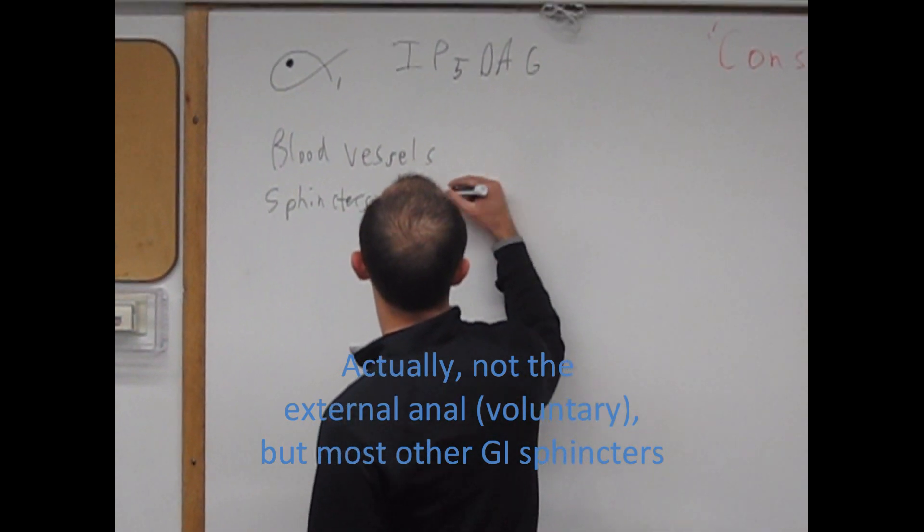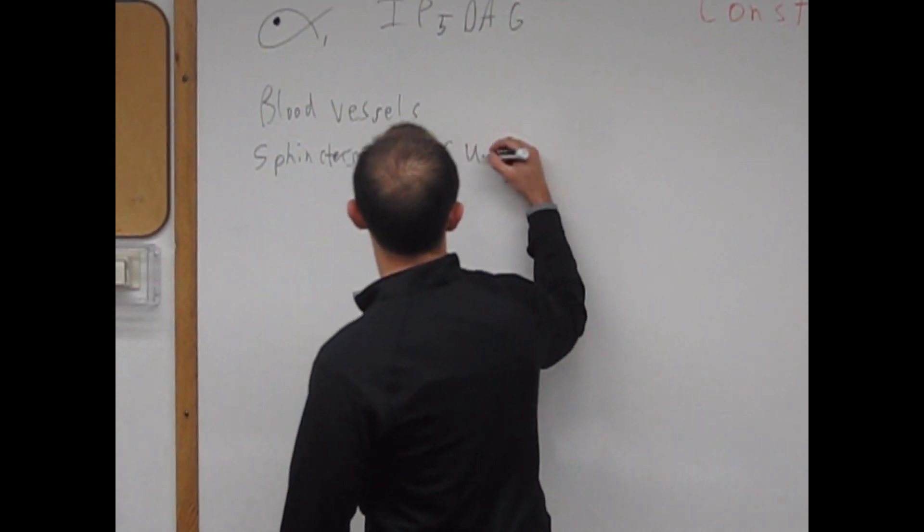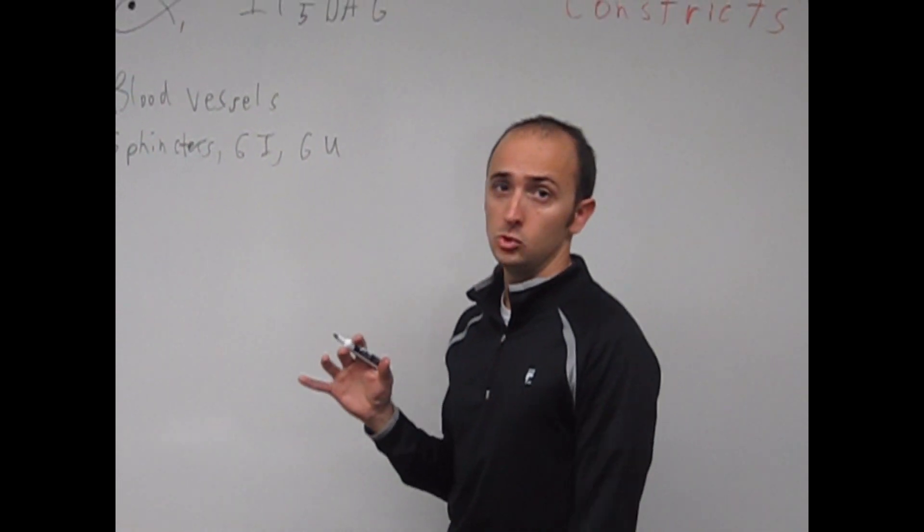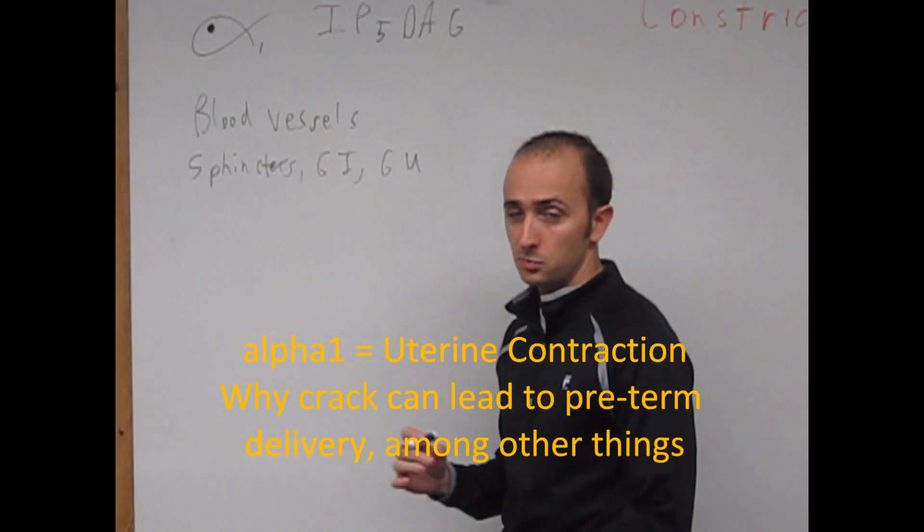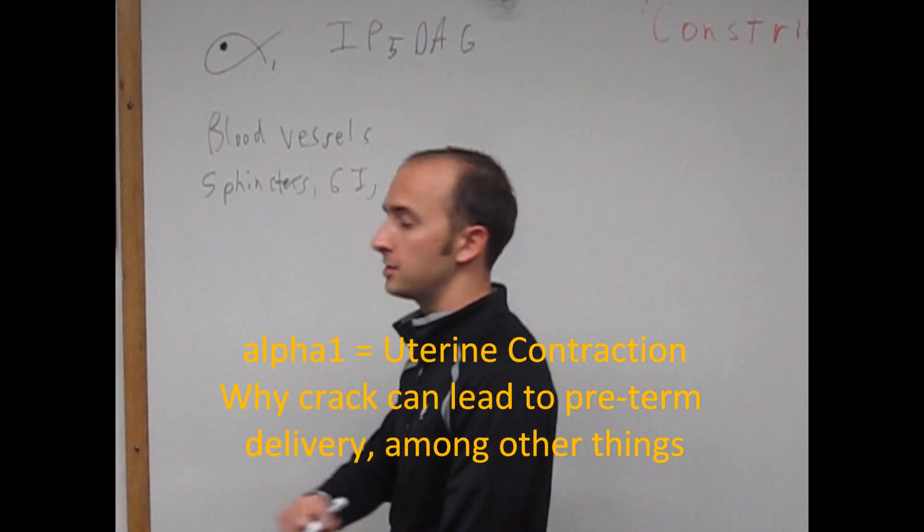So GI, let's say GU. It constricts the uterus in pregnancy. It's basically pumping, helping to push that baby out.